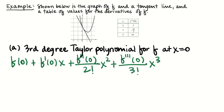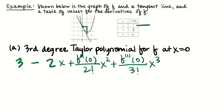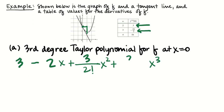In the table, they give me the second and third derivatives. F of 0 is the height of the graph right there — that's 3. F prime of 0 is the slope of the tangent line: it went over 1 and down 2, so slope is negative 2, giving minus 2x. F double prime of 0 equals 3 from the table. F triple prime is negative 23 over 2; dividing by 3 factorial which is 6 gives negative 23 over 12. So the third degree Taylor polynomial for f centered at x equals 0 is 3 minus 2x plus (3/2) x squared minus (23/12) x cubed.